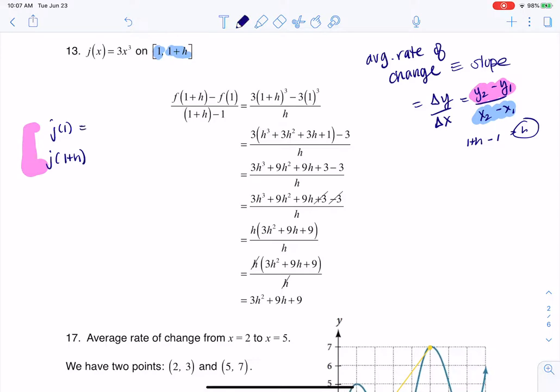According to this formula, it'll be 3 times 1 cubed, and then if I want to do that a little bit further, that'll be 3 times 1, which is just 3.